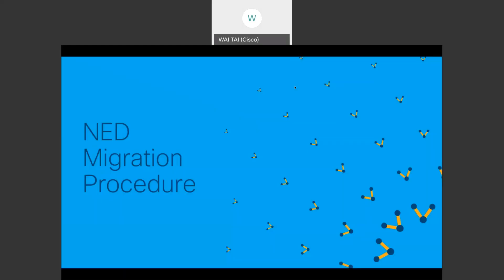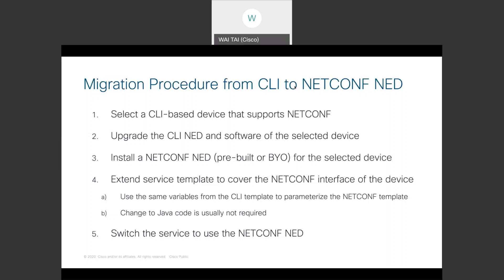Let's look at how to migrate from a CLI NED to a NetConf NED for an existing service application. The first step is to select a CLI-based device that supports NetConf. You then upgrade the CLI NED and the software of the selected device. Then you install a NetConf NED, either pre-built or build-your-own, for the selected device. The CLI NED should be compatible with the NetConf NED at this point for your service application use case, so you can push CLI configs to the device and use NSO's compare config command to identify the XML payload differences through NetConf.